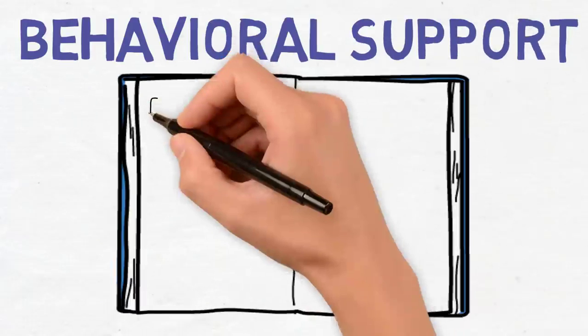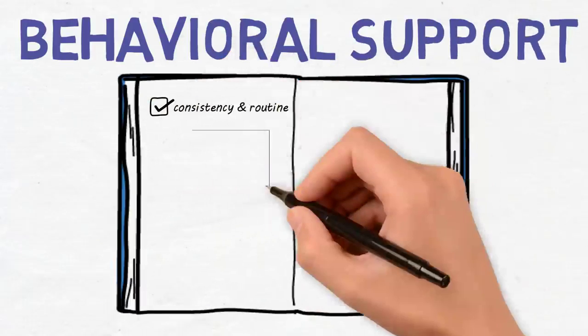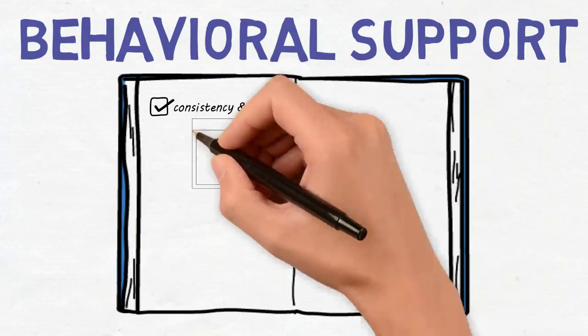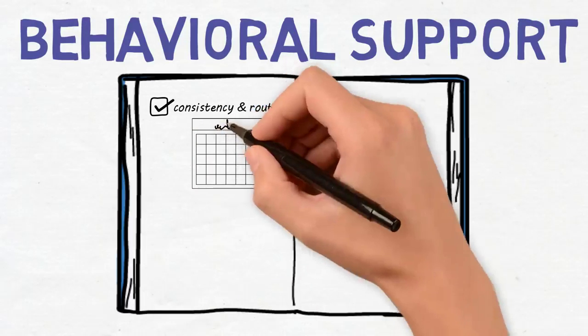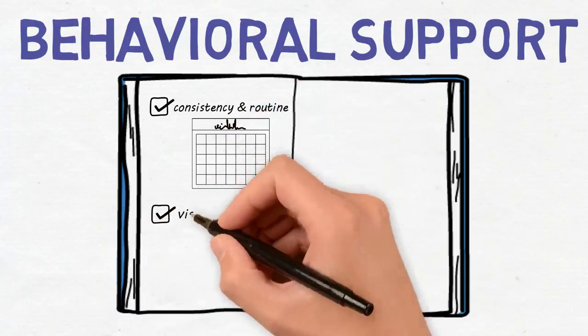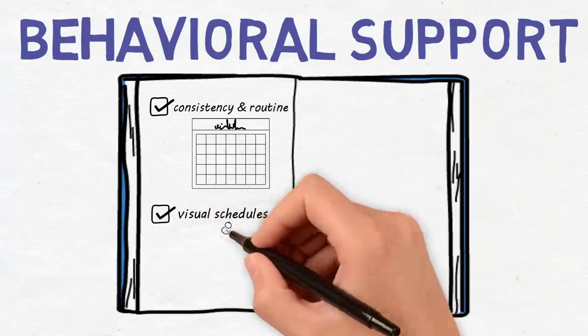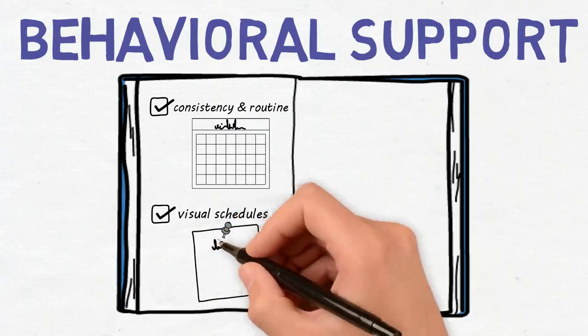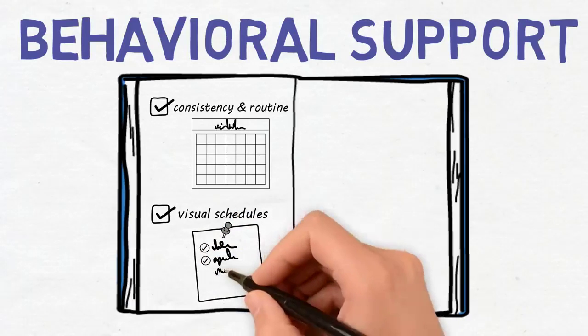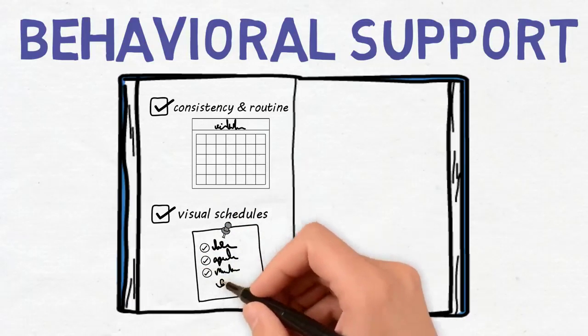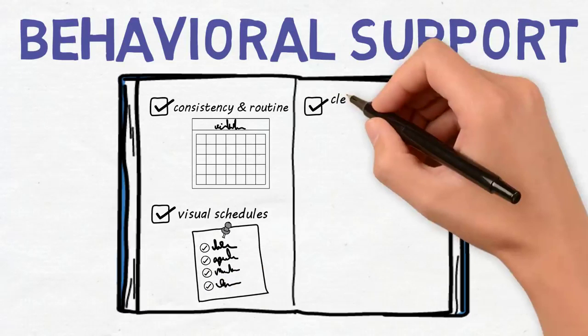Consistency and routine are very important to children with ASD. Children with ASD experience anxiety when they deviate from a schedule. The daily school routine should be predictable with clear expectations. Visual schedules eliminate the unexpected and enable students to prepare for transitions. Because transition times are often difficult for students with ASD, a check schedule transition queue should be given each time a transition is expected of them.